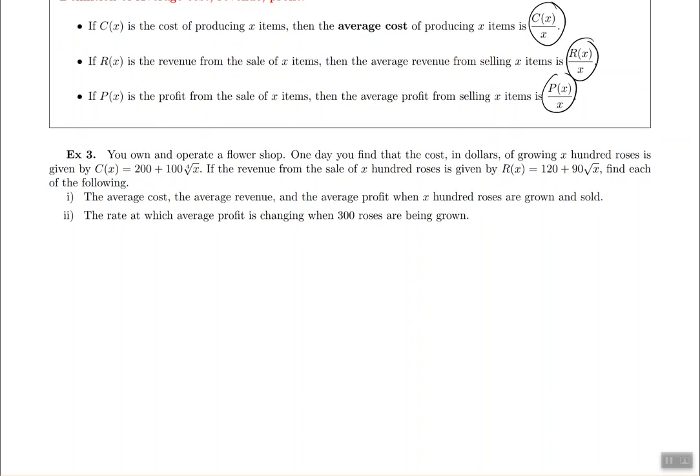In example three, we're going to use these terms to do something useful. You want to operate a flower shop. One day you find that the cost in dollars of growing X hundred roses is given by the cost formula. The revenue from the sale of X hundred roses is given by the R of X formula. X in this problem represents the number of roses in hundreds — so X equal to one means 100 roses, X equal to two means 200 roses.